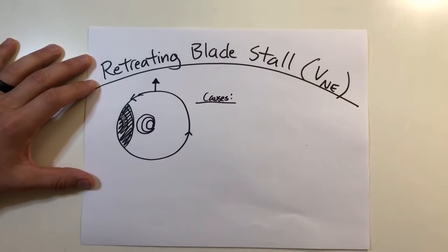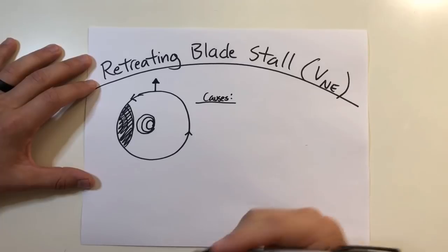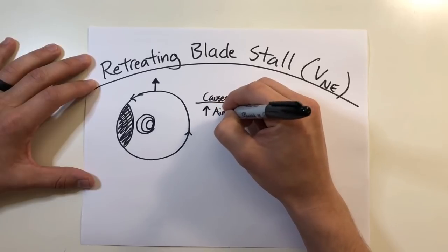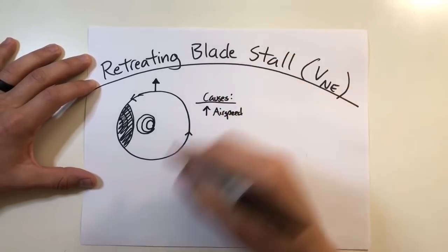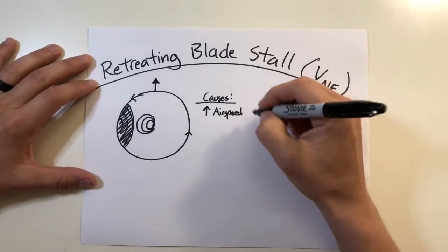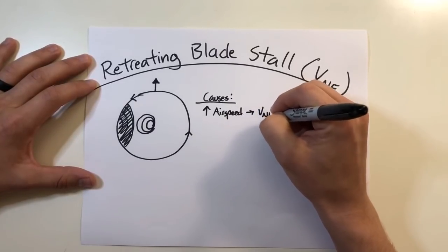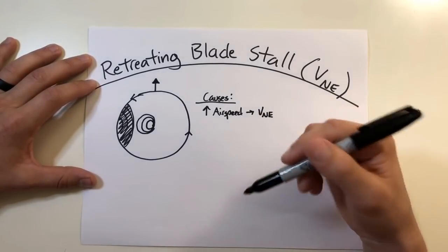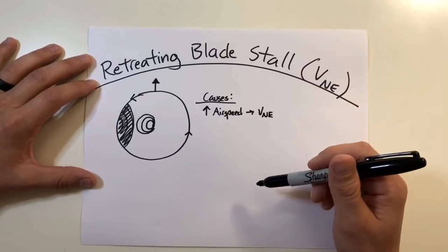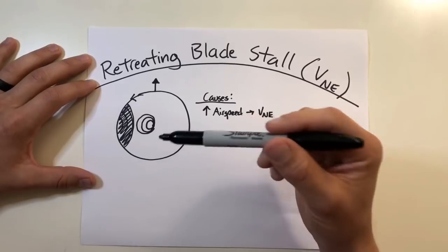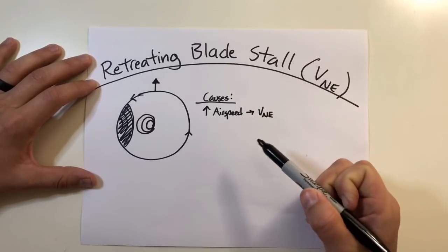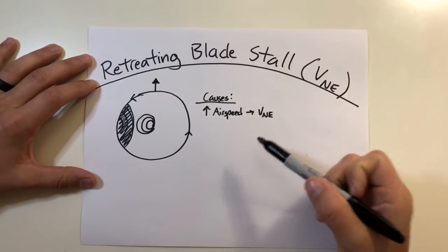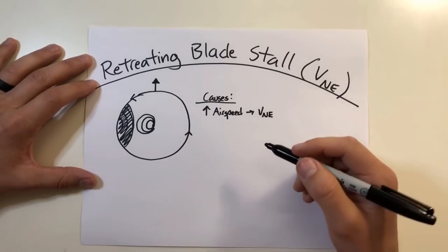The number one reason that you can find yourself getting into a retreating blade stall condition would be an excessively high forward airspeed. When you look in your operator's manual, you see a number that says VNE — velocity never exceed. This is a speed that the engineers have determined for that helicopter, indicating that you are most likely going to get into a retreating blade stall condition or cause structural damage. It's a condition you should be avoiding at all times.